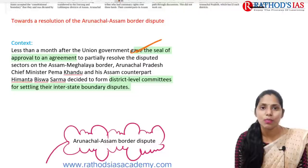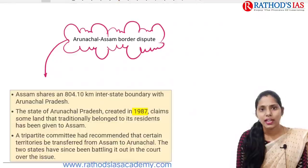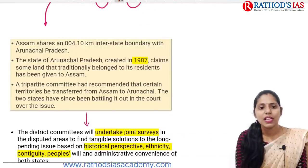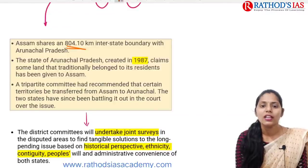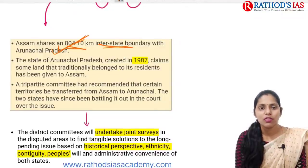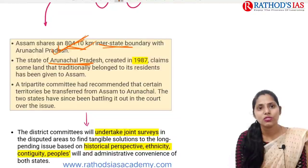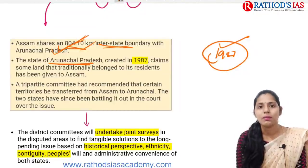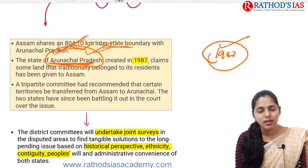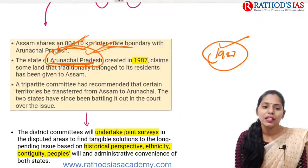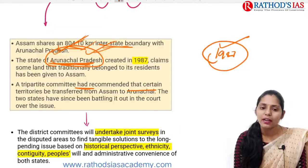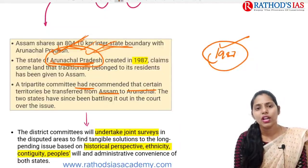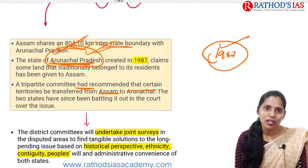These district-level committees are going to examine the issues and come up with resolutions for interstate boundary disputes. Assam mainly shares 804.10 km of interstate boundary with Arunachal Pradesh. The state of Arunachal Pradesh was mainly created in 1987, and it mainly claims that some land traditionally belonging to its residents had been given to Assam. A three-party committee had recommended that certain territories be transferred from Assam to Arunachal Pradesh, and because of that the two states have been battling regarding border issues.